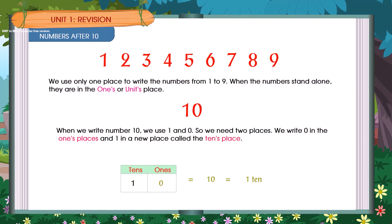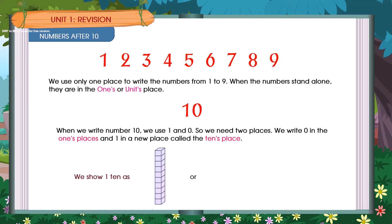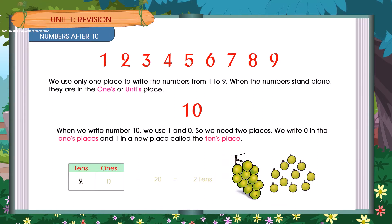1, 0 is equal to 10, which equals 1 ten. We show 1 ten as 2, 0 — which is equal to 20 — equal to 2 tens.